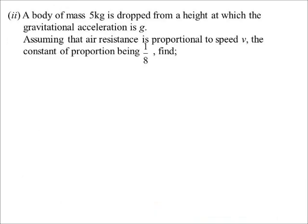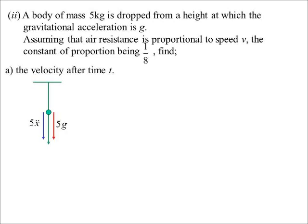Ah! Let's have a look at this one. A body of mass 5 kg is dropped from a height at which the gravitational acceleration is g. We're going to assume the air resistance is proportional to v, and they've told us that constant of proportion is going to be 1/8. Find the velocity after time t. Okay, this time, Bob's going down. So my resultant force will be mx double dot, but they've told me the mass is 5, so I might as well substitute that in there: 5x double dot. Gravity, force due to gravity will be 5g. Resistance is 1/8 v, so 1/8 v. Set up our equation. So the resultant force is 5g. If it's in the same direction, it's positive. If it's in the opposite direction, it's negative. So acceleration is g minus 1/40 v.